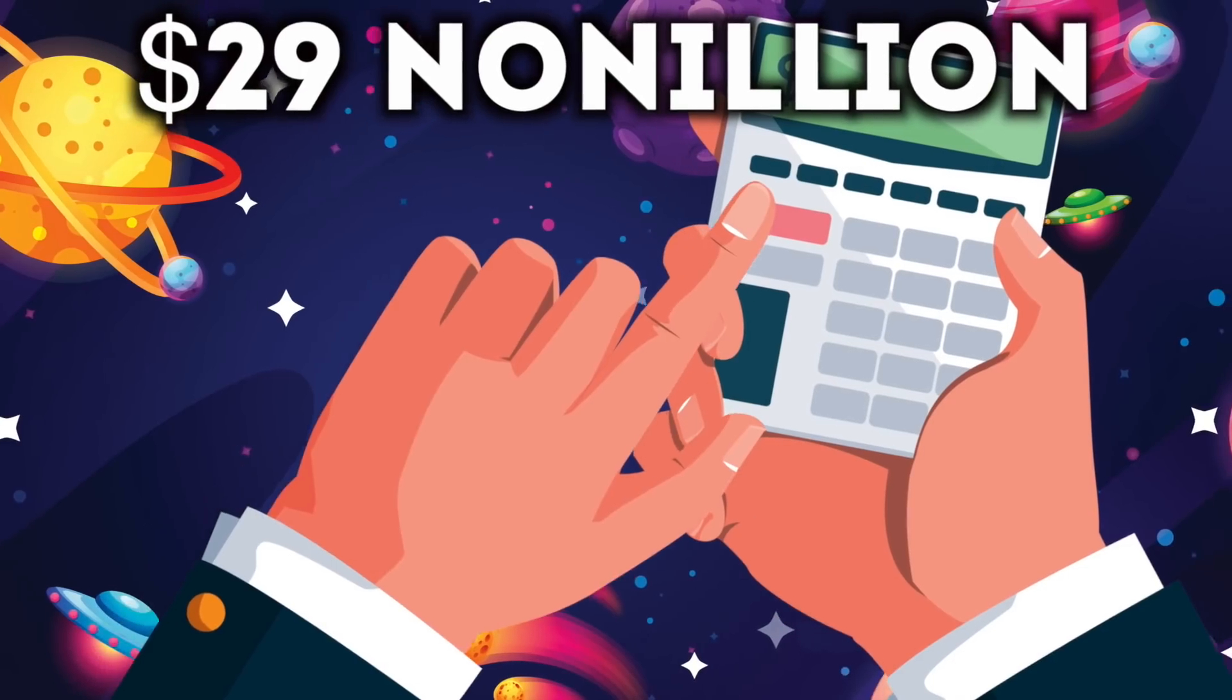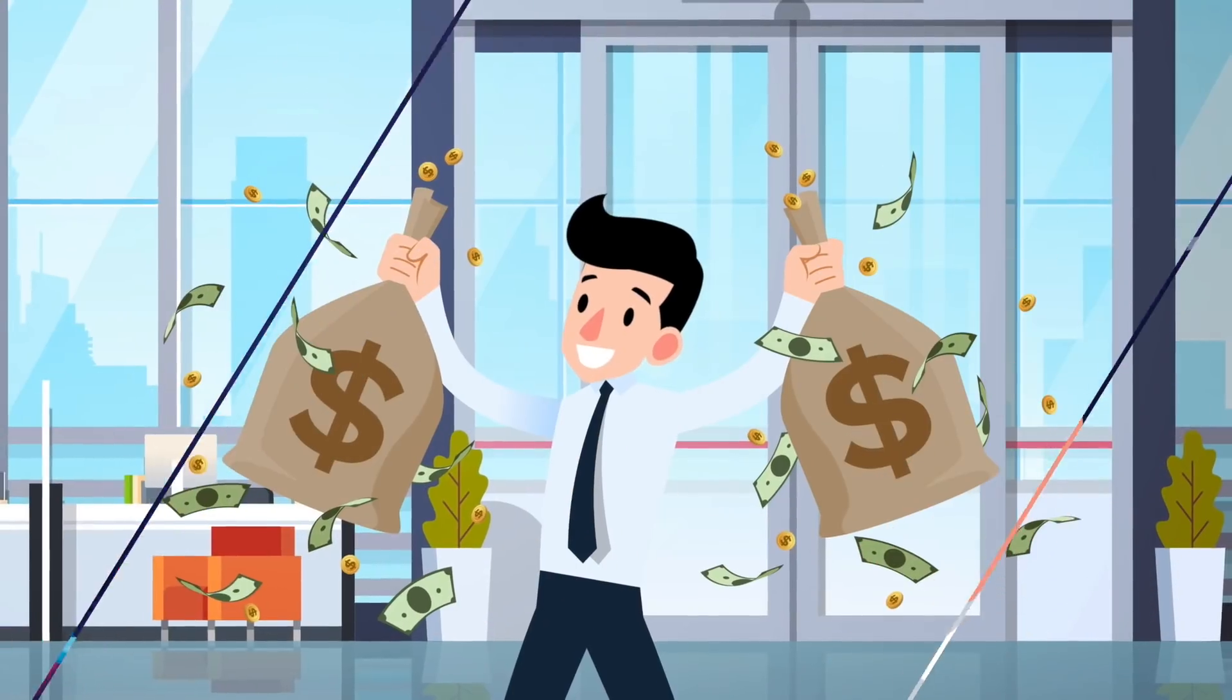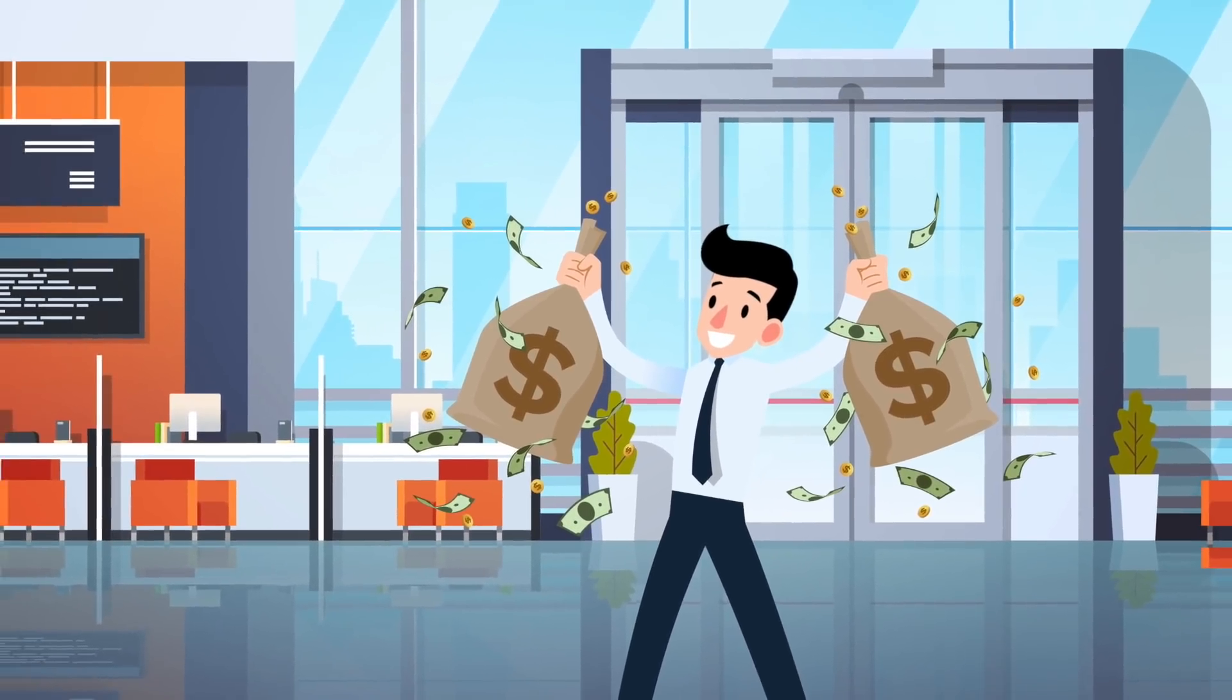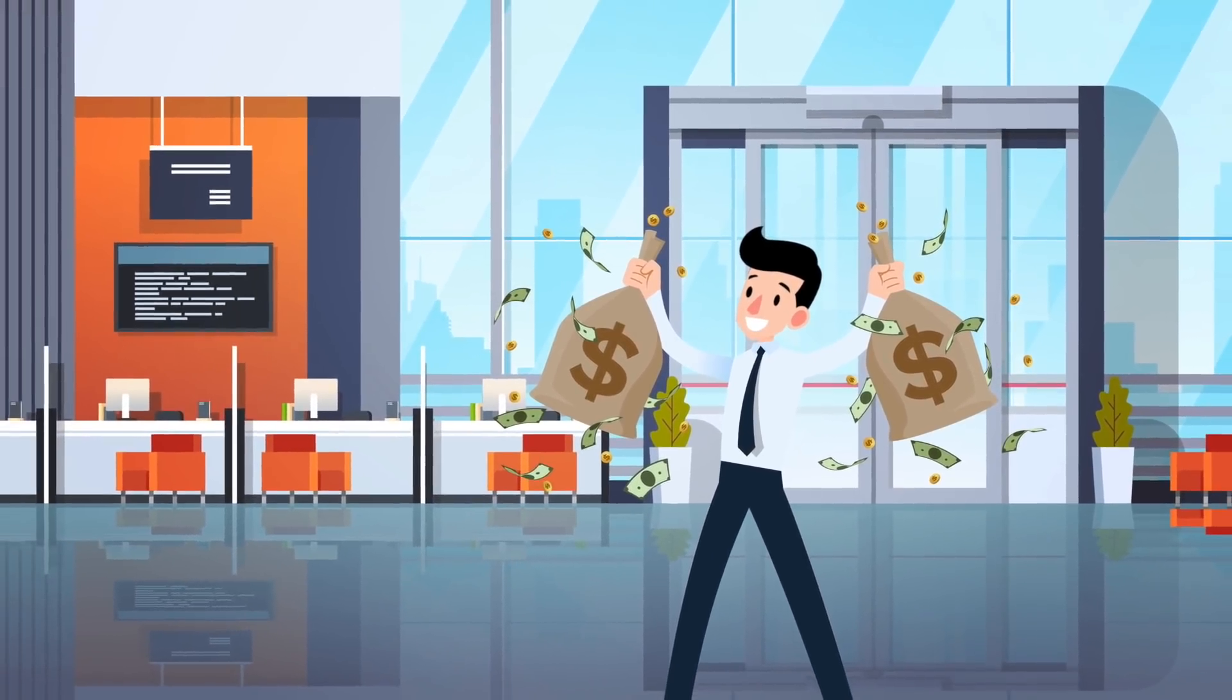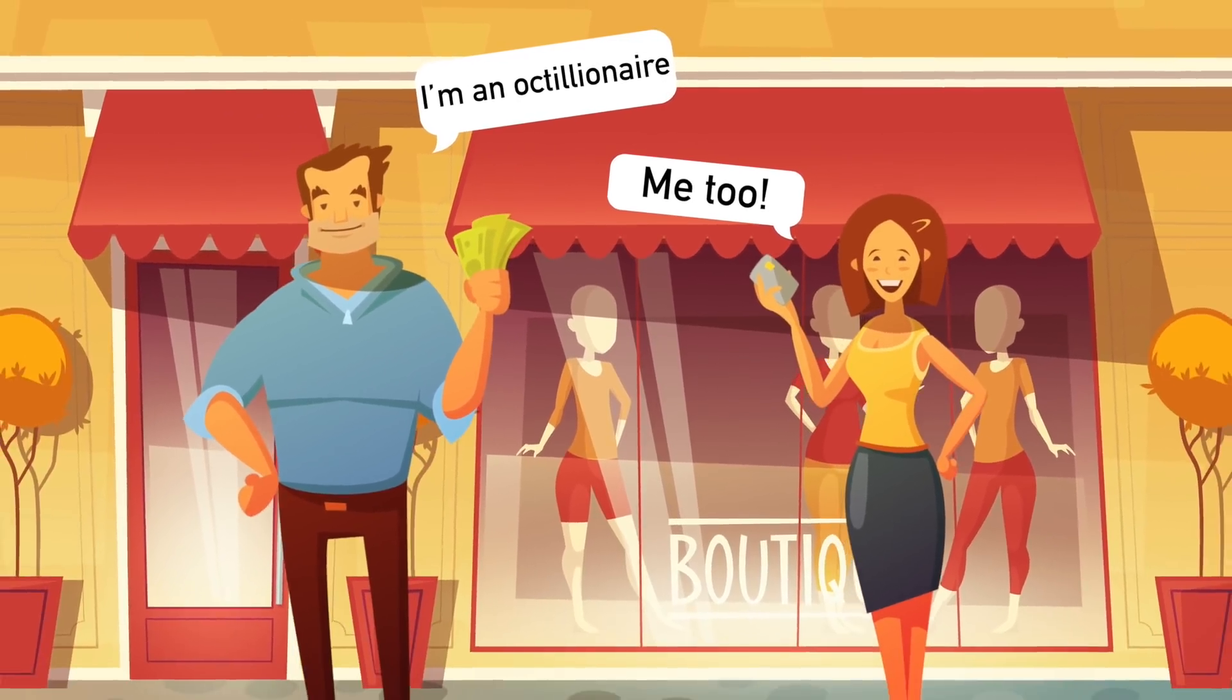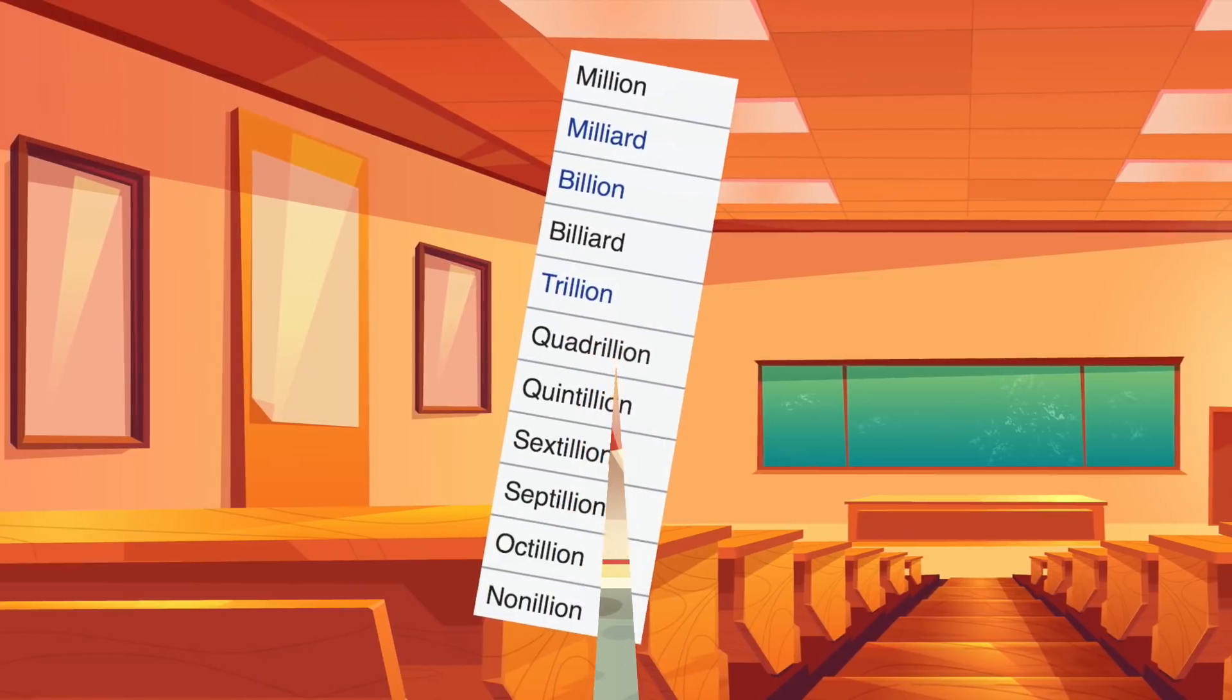If we were to split this planet up amongst the seven billion humans on Earth, we'd all be multi-multi-multi-trillionaires. In fact, we would be much more than trillionaires. Everyone on Earth would at least be an octillionaire. To put that into perspective, here's the list of how those number rankings go.